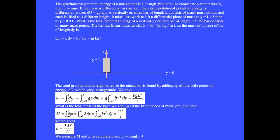A vertically oriented bar of length l consists of many mass points, and each is lifted to a different height. It takes less work to lift a differential piece of mass to y equals l over 5 than to y equals 0.9l. What is the total potential energy of a vertically oriented bar of length l? The bar consists of many mass points.